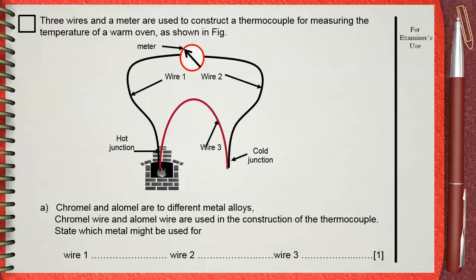Part A: Chromel and alumel are two different metal alloys. Chromel wire and alumel wire are used in the construction of the thermocouple. State which metal might be used for wire one, wire two, wire three.